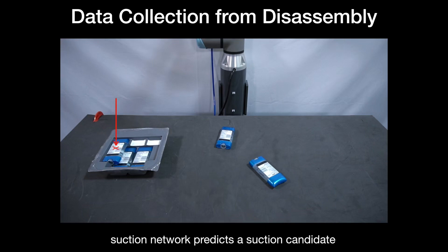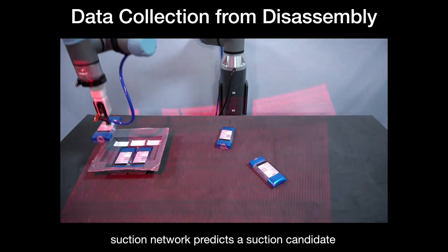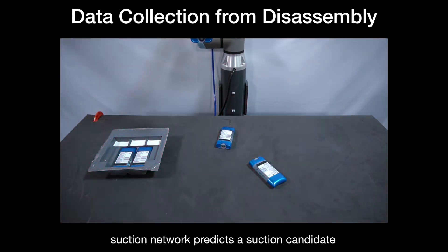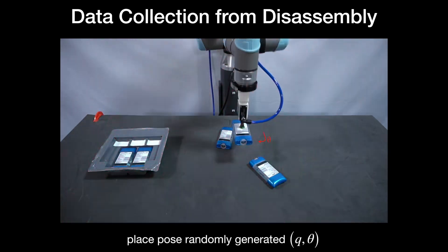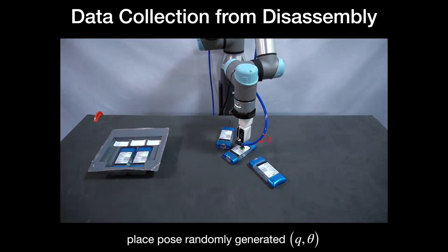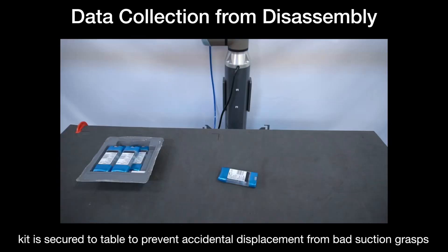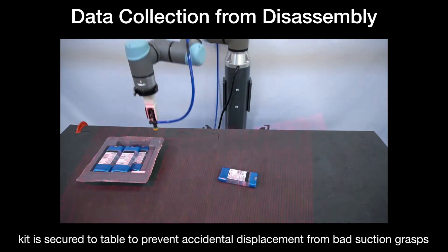To do so, the suction network first predicts the suction location inside the kit, which is executed by the suction primitive to grasp the object. If the grasp is successful, the robot randomly places and orients the object on the work surface. Otherwise, it tries the next best suction location. The suction network is trained through trial and error, and the kit is taped to the table to ease the learning and prevent accidental displacements.